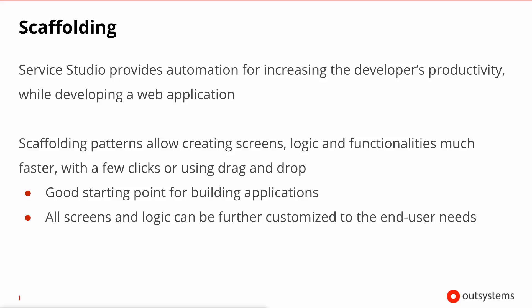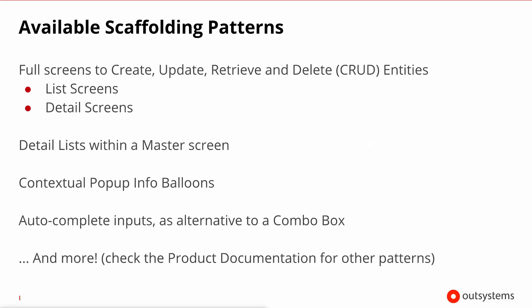Scaffolding doesn't produce black boxes where you need to keep everything that was generated. At the highest level, you're able to create full blown list and detail screens that use an entity of your module. Once you have a detail screen, you're able through scaffolding to create a detail table underneath — for example, which orders a customer has placed. It's also possible to generate pop-up dialogs, info balloons, and auto-complete inputs as an alternative to the combo box. You can find more about other patterns in the product documentation.